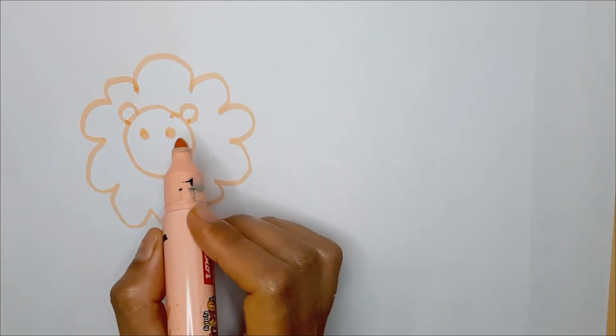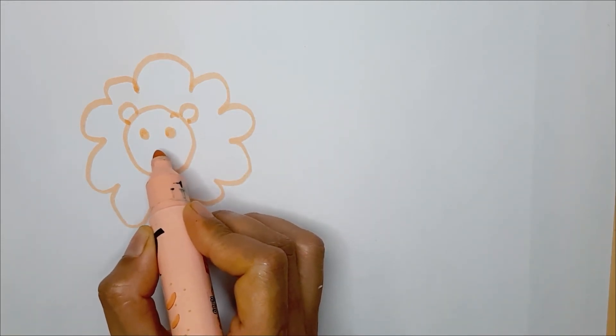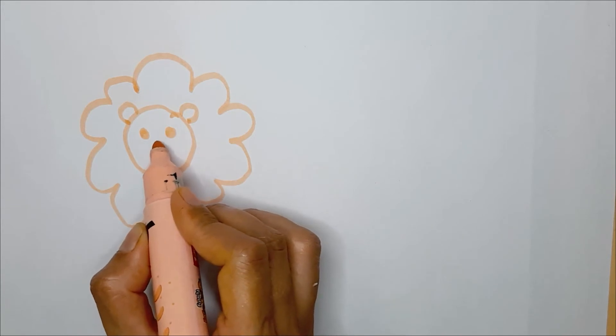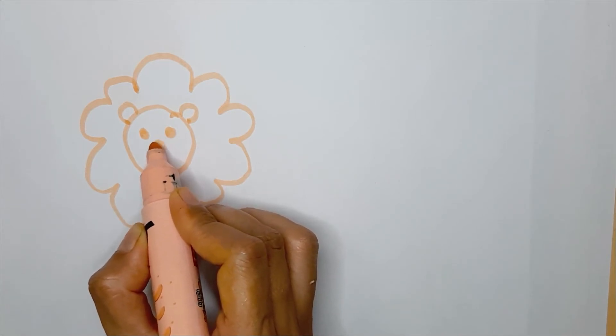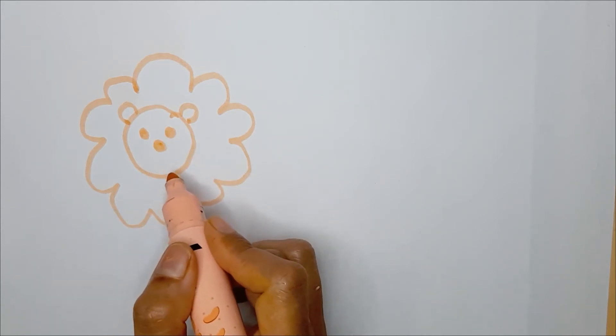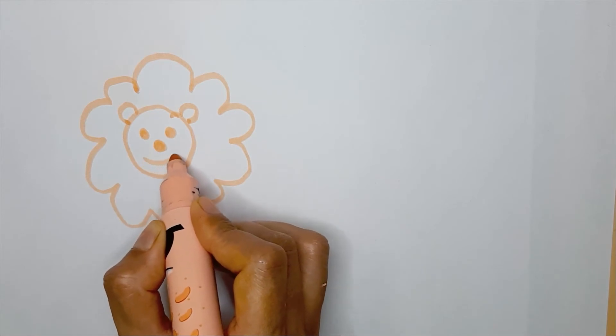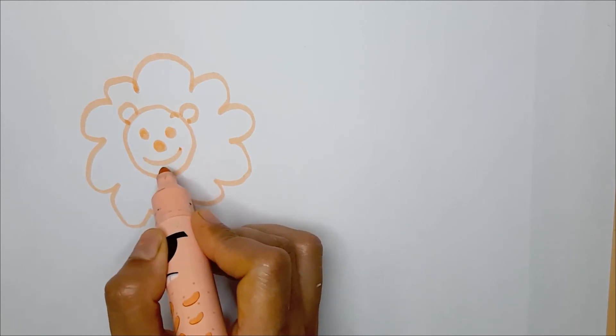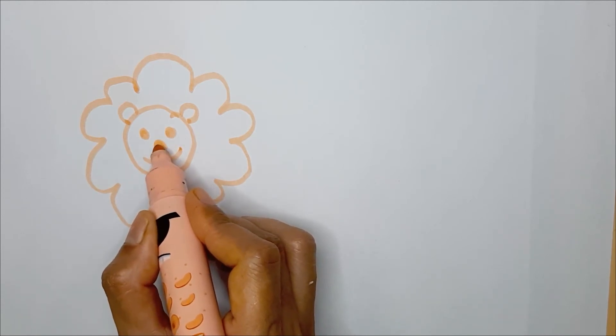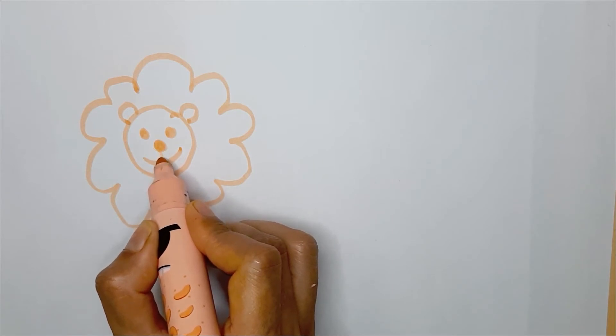Next is his nose. For the nose, I'm just going to make the same little dot. And then what are we going to make? We are going to make a smiling lion mouth to join his nose and his smile.